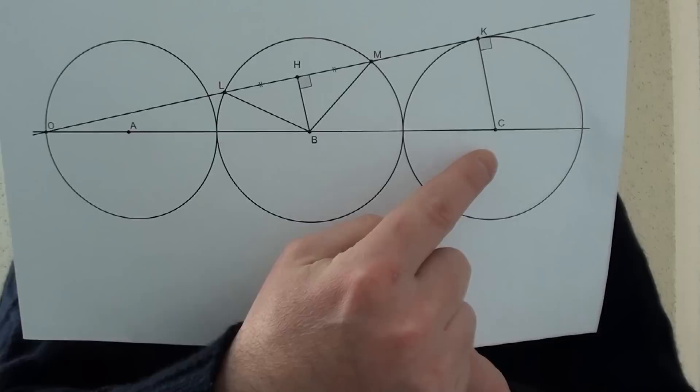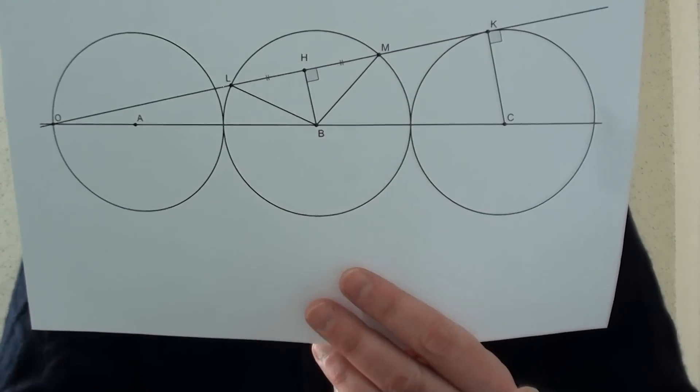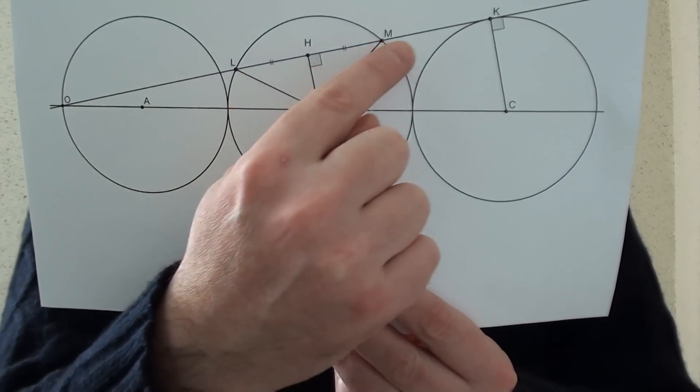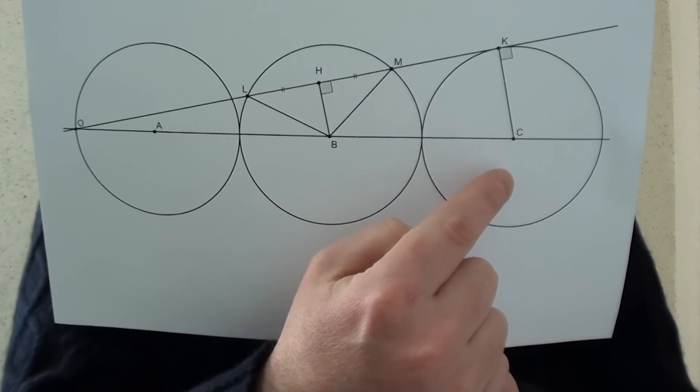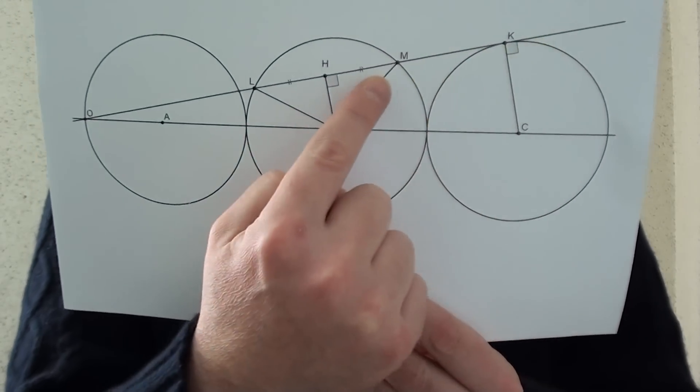We're going to draw CK and since this line OK is tangent to this circle, CK is actually perpendicular to OK.